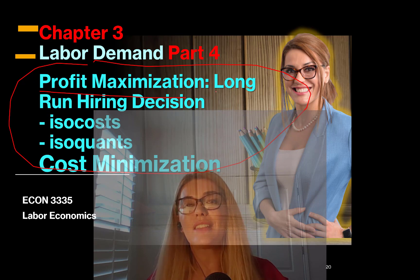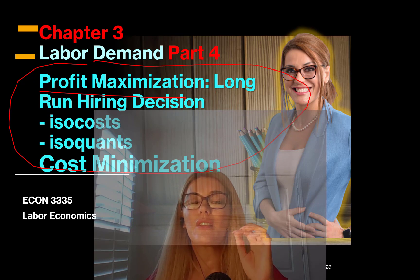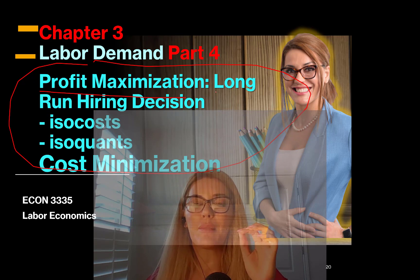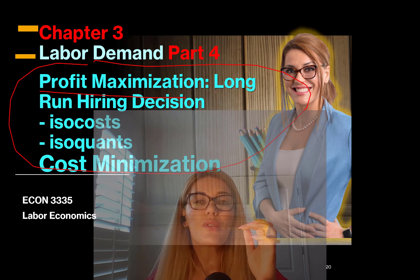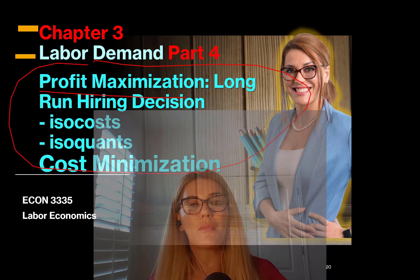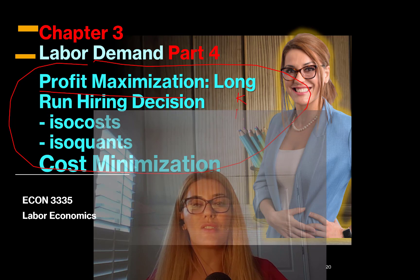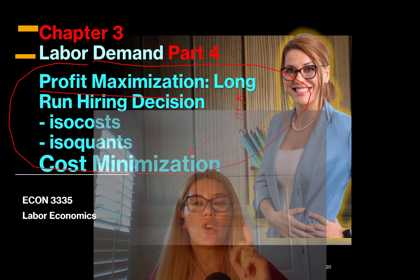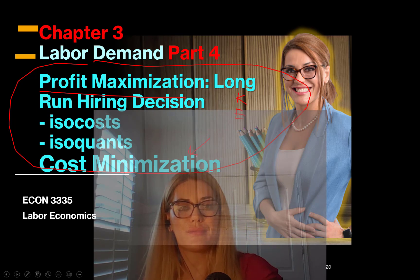I'll see you in Part 4, where we dig deeper into the long-run hiring decision — where not only labor employment is variable, but capital is also variable. So you're now making both a capital decision and an employment decision, which is also connected to cost minimization. See you in Part 4.